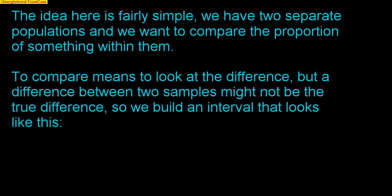The idea here is fairly simple. We have two separate populations, and we want to compare the proportion of something within them. So maybe we have the proportion of kids at Twinsburg who are absent versus the proportion of kids at Solon that are absent. So we have two different populations — Twinsburg and Solon — and we're looking at the proportion of kids that are absent at each of these places.